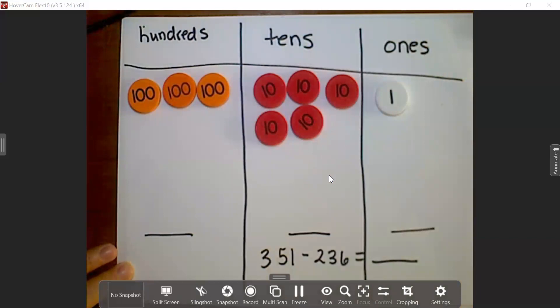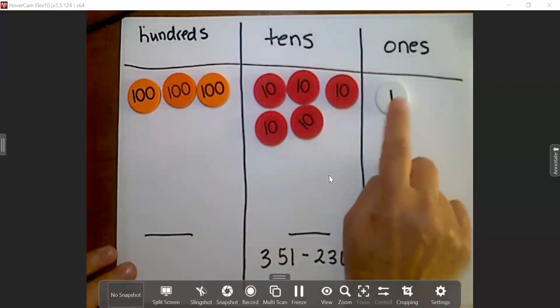So now we're ready to subtract. I'm going to start in the ones place. We'll look at my number 236, and the ones place has a 6. So I'm going to come to my ones place, and I'm going to subtract 6. But you notice I have a problem. I can't take away 6 because I've only got 1. So that is telling me I'm going to have to trade. I'm going to have to regroup.